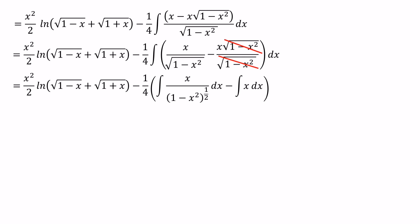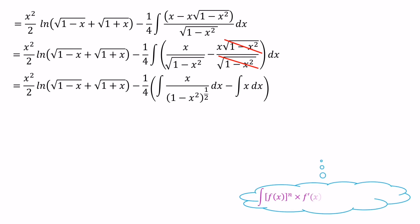To evaluate the integral of x over (1-x²)^(1/2), we use the formula: the integral of [f(x)]^n · f'(x) equals [f(x)]^(n+1) / (n+1). We write (1-x²)^(1/2) from the denominator as (1-x²)^(-1/2) in the numerator. Here f(x) = 1-x², and n = -1/2. The differentiation of (1-x²) equals -2x, so we need -2x. To get it, we place -2 in the numerator and cancel it with -2 in the denominator, then bring 1/(-2) outside the integral.